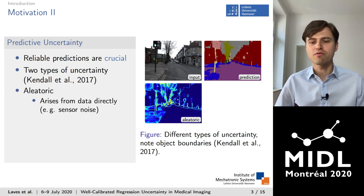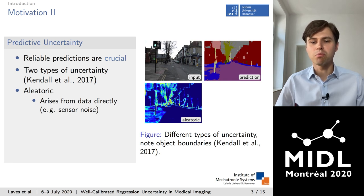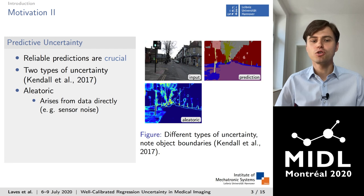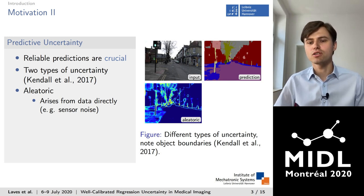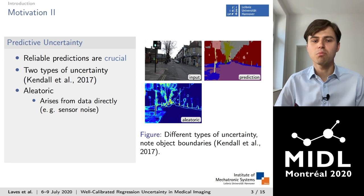The aleatoric uncertainty results from ambiguous data, for example from sensor noise. Here the borders of objects have high aleatoric uncertainty due to the limited resolution of the image sensor — it is not clear to which class a border pixel belongs.